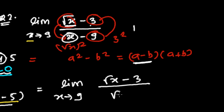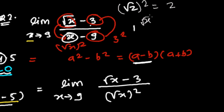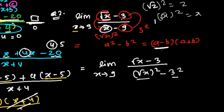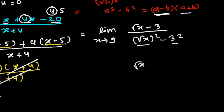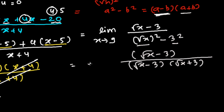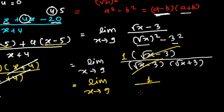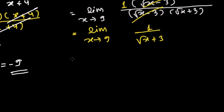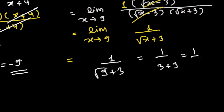Rewrite the denominator x - 9 as (√x)² - 3² = (√x - 3)(√x + 3). The numerator is (√x - 3). So we cancel (√x - 3) from numerator and denominator. The expression becomes: limit as x tends to 9 of 1/(√x + 3). Substituting x = 9: 1/(√9 + 3) = 1/(3 + 3) = 1/6. That is our answer.